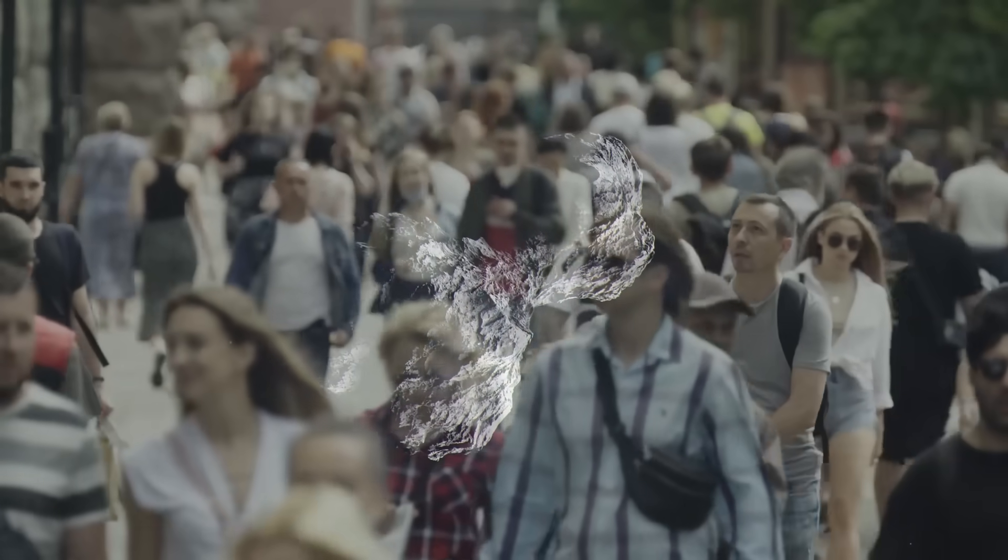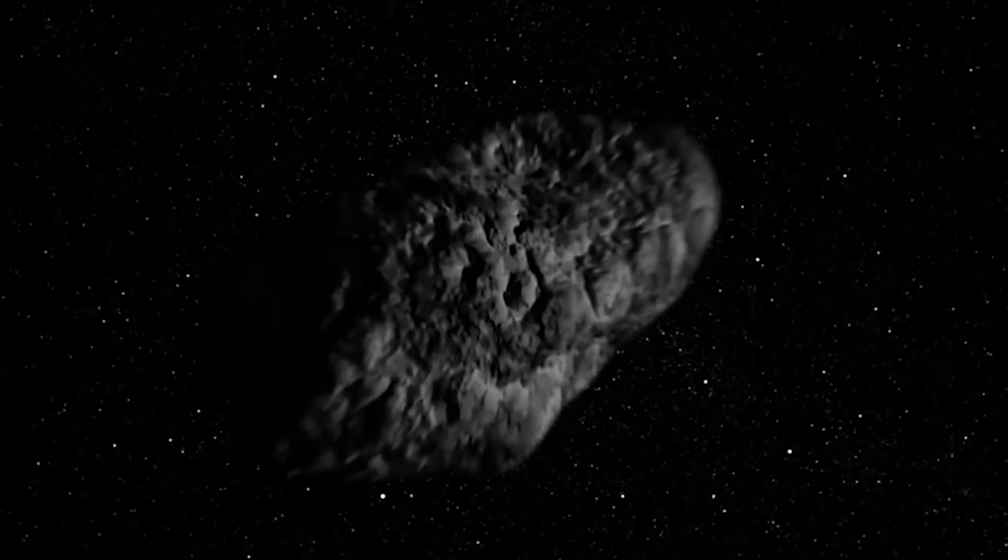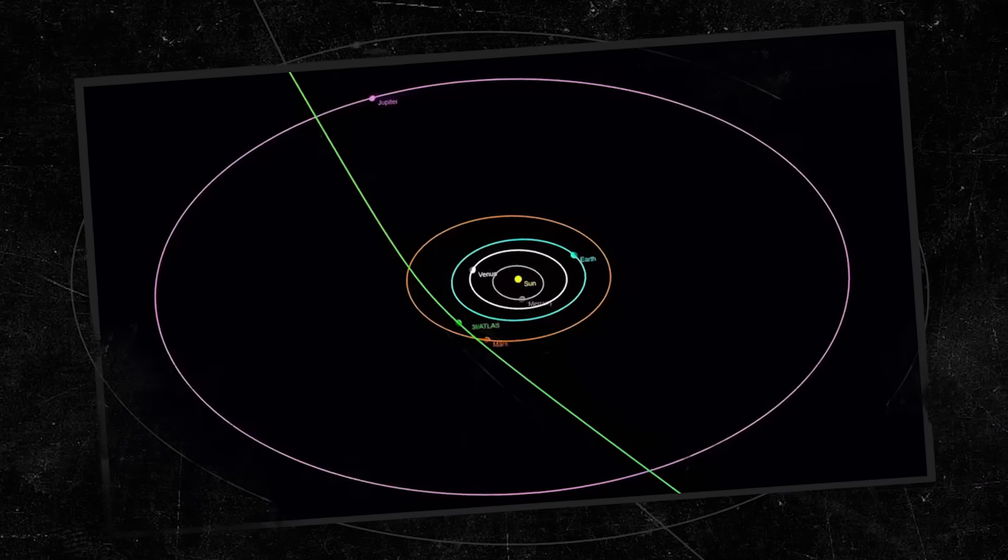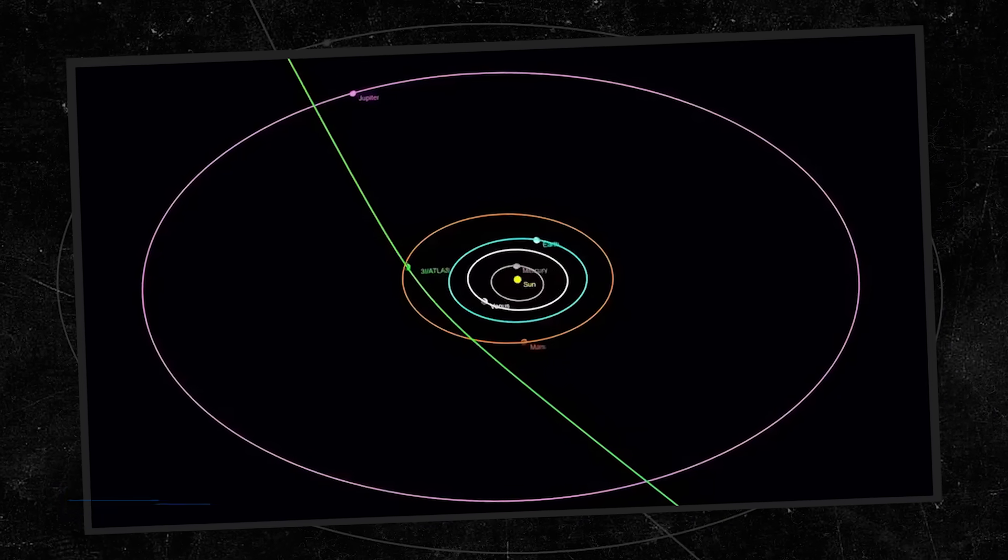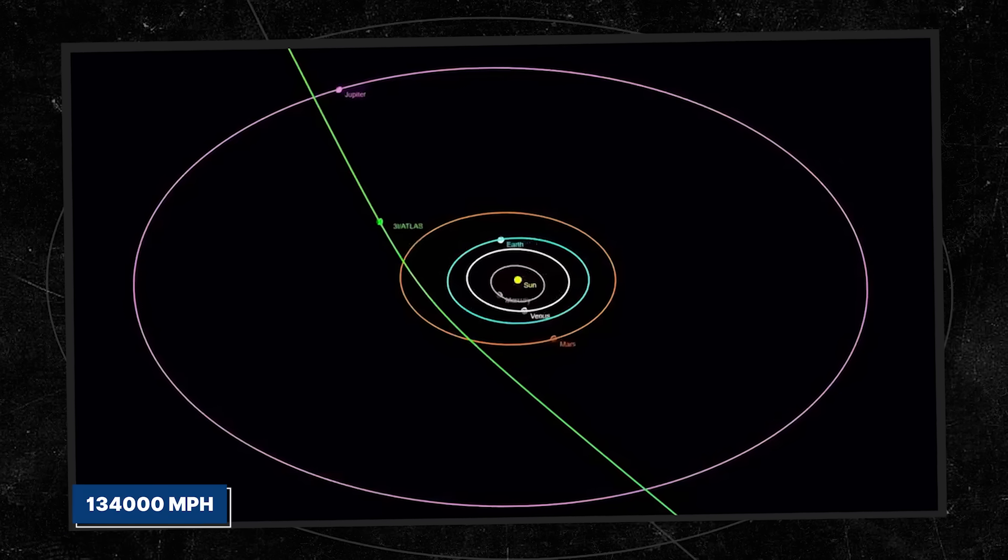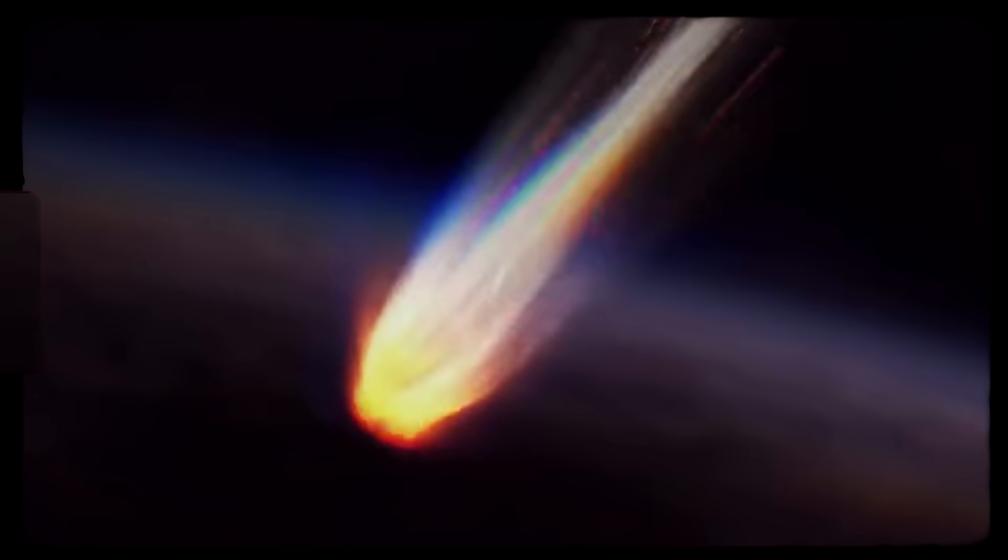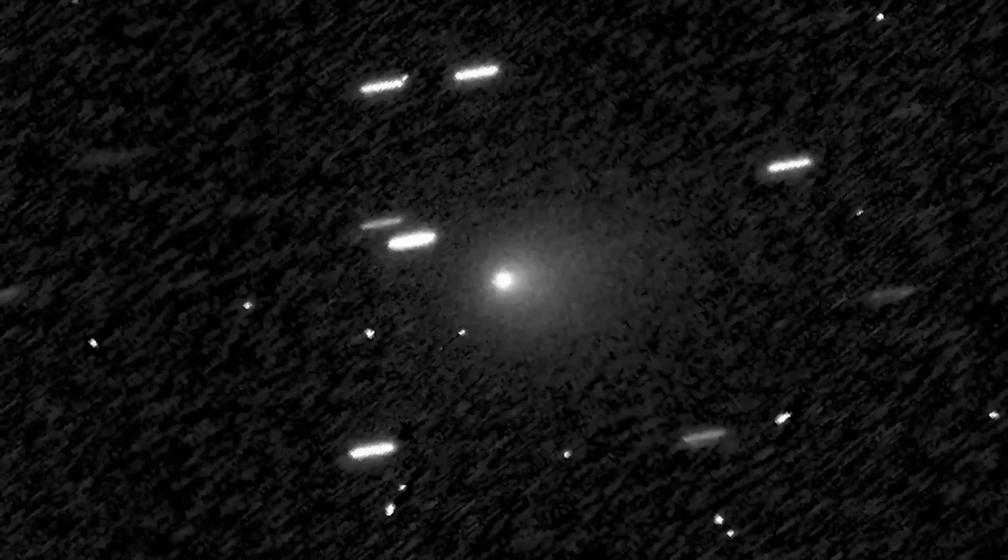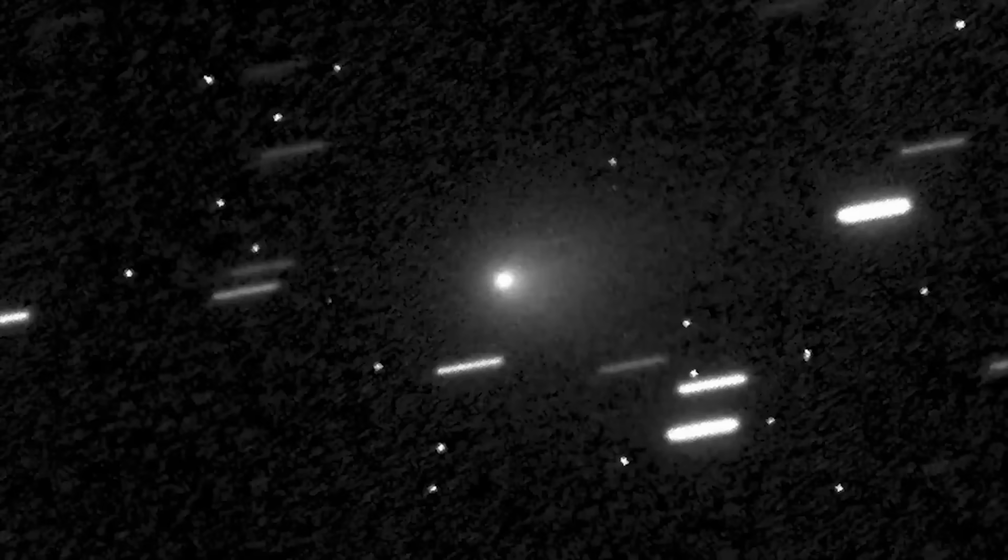But many people are crazy about these discoveries, not realizing what they truly mean. This wasn't just another rock. This visitor was different. It was streaking through our solar system at nearly 60 kilometers per second. That's over 134,000 miles per hour, a speed so immense it easily overcomes the sun's massive gravitational pull, ensuring this object is on a one-way trip, destined to return to the blackness between the stars.